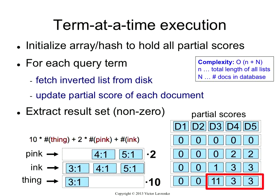So what is the complexity of this? It's fairly simple — it's linear in n, O(n), where n is the total number of postings. That's better than what we had for doc-at-a-time. But now we've got this additional factor, big N, which is the total number of documents in the database — the size of the resulting list. We need to walk over that list to extract the result set. Usually big N is a lot smaller than little n, so you just say it's linear in n. But in some cases, big N will actually be bigger than little n, so you have to take that into account.